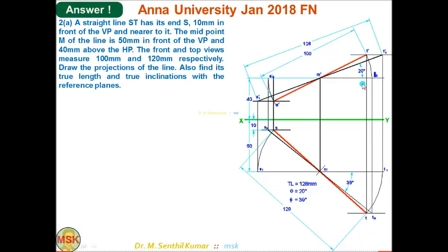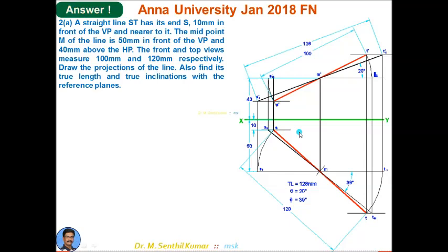The front view measures 100 mm. From M-dash, set the compass to 50 mm (100/2). With M-dash as center, cut arcs on the projectors through S and T to get S-dash and T-dash. Draw the line joining S-dash and T-dash — that is the front view. You have now directly obtained the top view and front view from the given data.